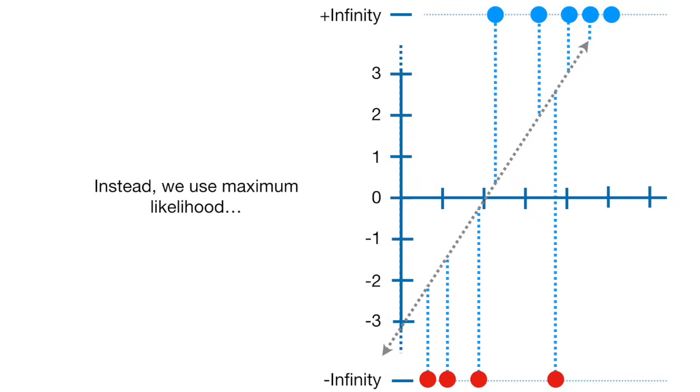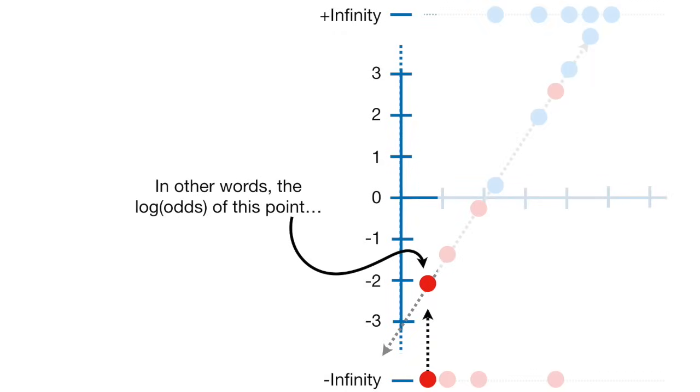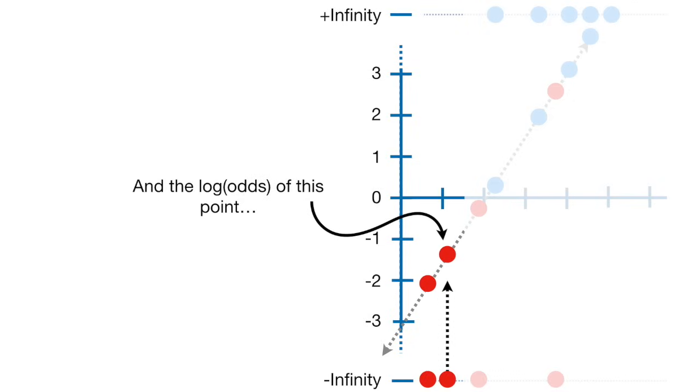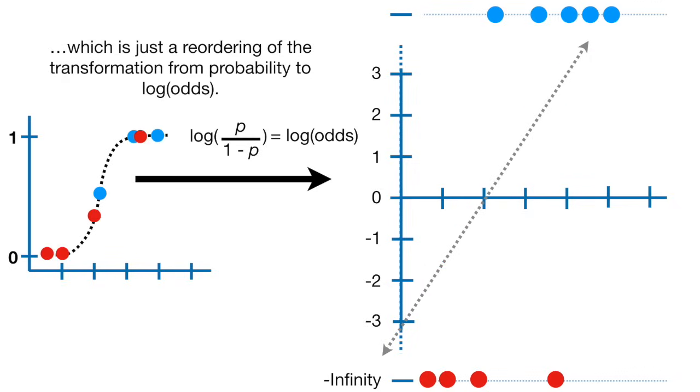Instead, we use maximum likelihood. The first thing we do is project the original data points onto the candidate line. This gives each sample a candidate log odds value. In other words, the log odds of this point is 2.1, and the log odds of this point is 1.4. Then we transform the candidate log odds to candidate probabilities using this fancy-looking formula, which is just a reordering of the transformation from probability to log odds.